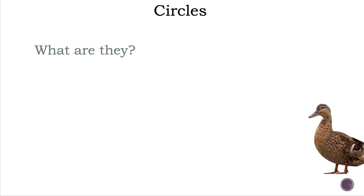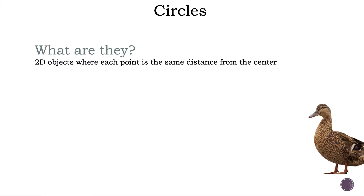Circles and their area formula — what are they? Circles are 2D objects where each point is the same distance from the center, which leads to the study of geometry.